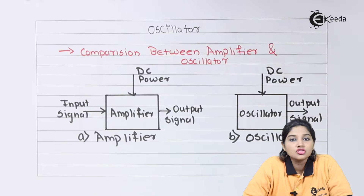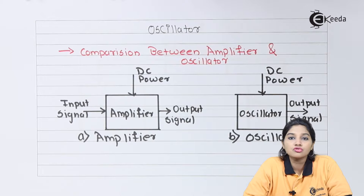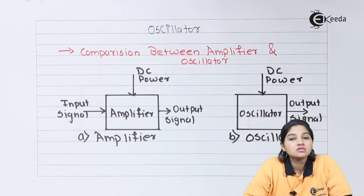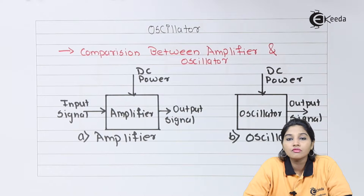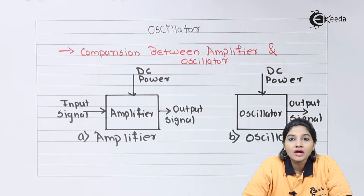We know that in most of the measurement and instrumentation systems as well as in electronic components we require signal generators. Signal generators are basically used for providing various outputs of the electronic system. So we require a circuit which can produce signals like sine wave, triangular wave, sawtooth wave, rectangular wave, and many more. The circuits which are used for producing signals having specified amplitude and specified frequency are called signal generators, which are nothing but oscillators.